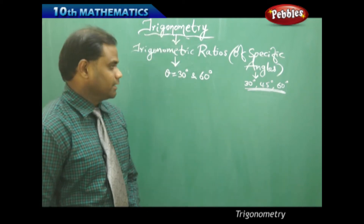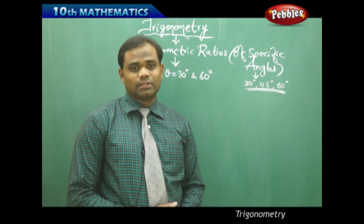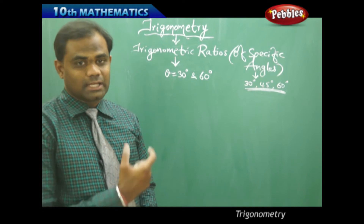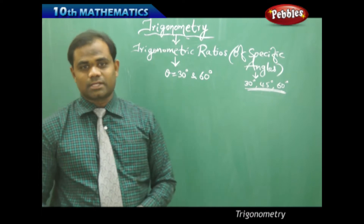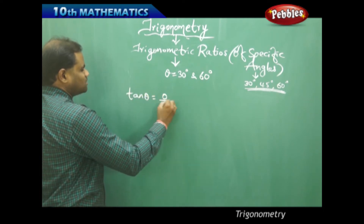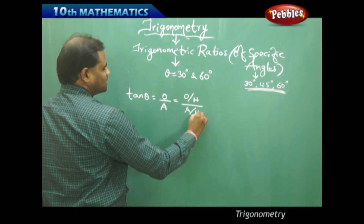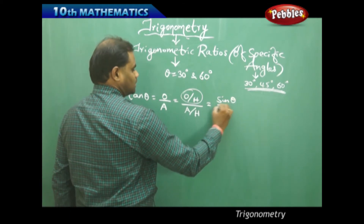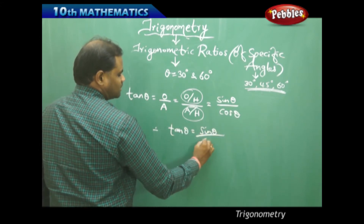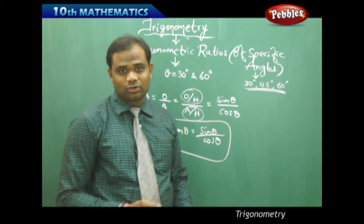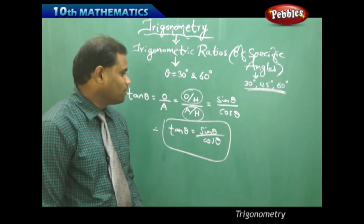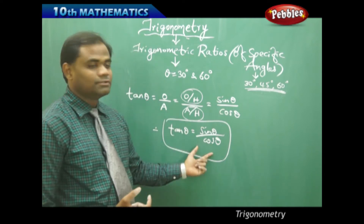Now that we have found sine, cos, tan, cosecant, secant, and cot for the special angle 45 degrees, switching on to the special angles 30 and 60. In the previous case, tan 45 was sine 45 by cos 45. In general, tan theta is opposite by adjacent, and dividing both by hypotenuse gives us O/H = sine theta and A/H = cos theta. Therefore, tan theta equals sine theta by cos theta — so if we find sine and cos, we get tan directly as their ratio.